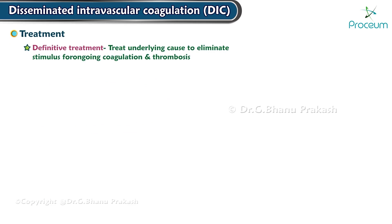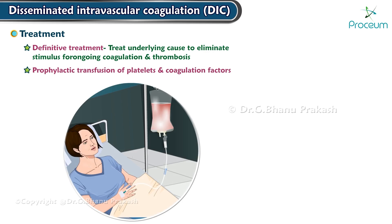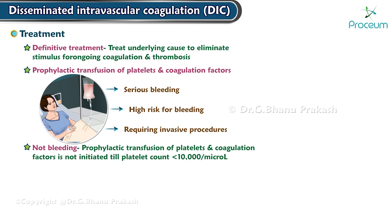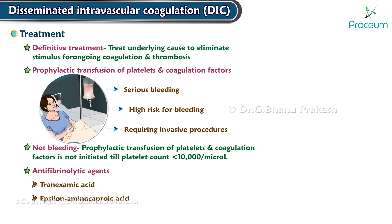The definitive treatment is treating the underlying cause to eliminate the stimulus for ongoing coagulation and thrombosis. Prophylactic transfusion of platelets and coagulation factors is used in patients with serious bleeding or those at high risk requiring invasive procedures. In patients who are not bleeding, transfusion is not initiated until platelet counts drop below 10,000. Administration of antifibrinolytic agents like tranexamic acid, epsilon-aminocaproic acid, or aprotinin is generally contraindicated.